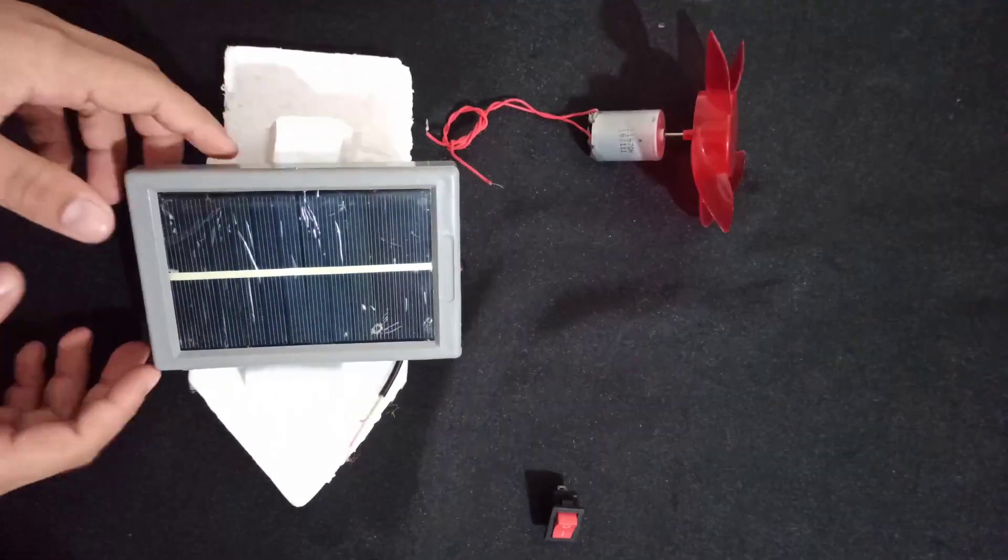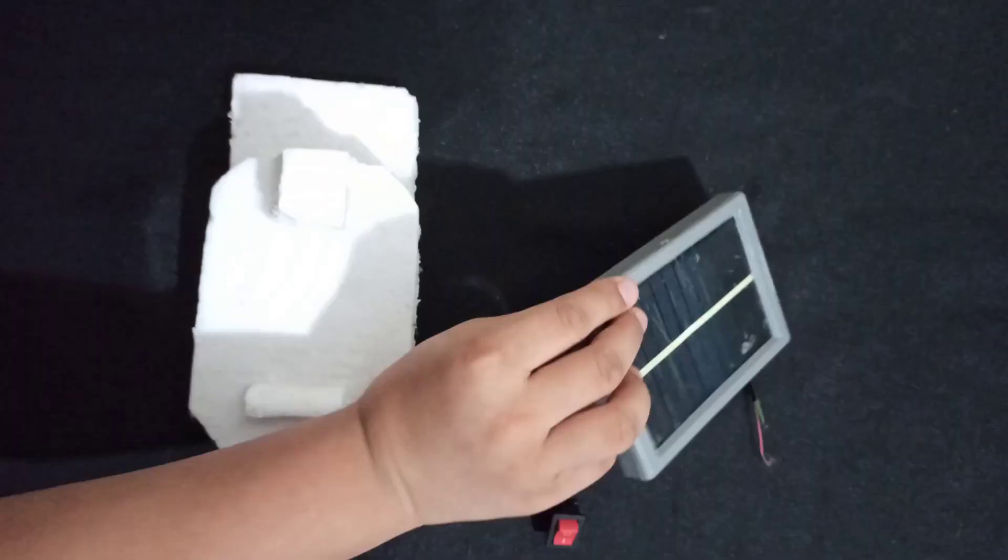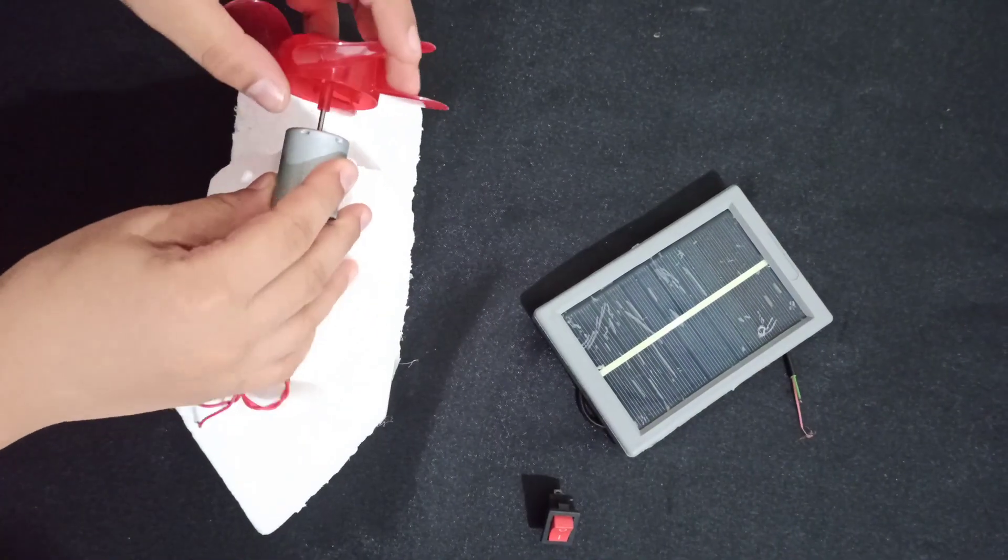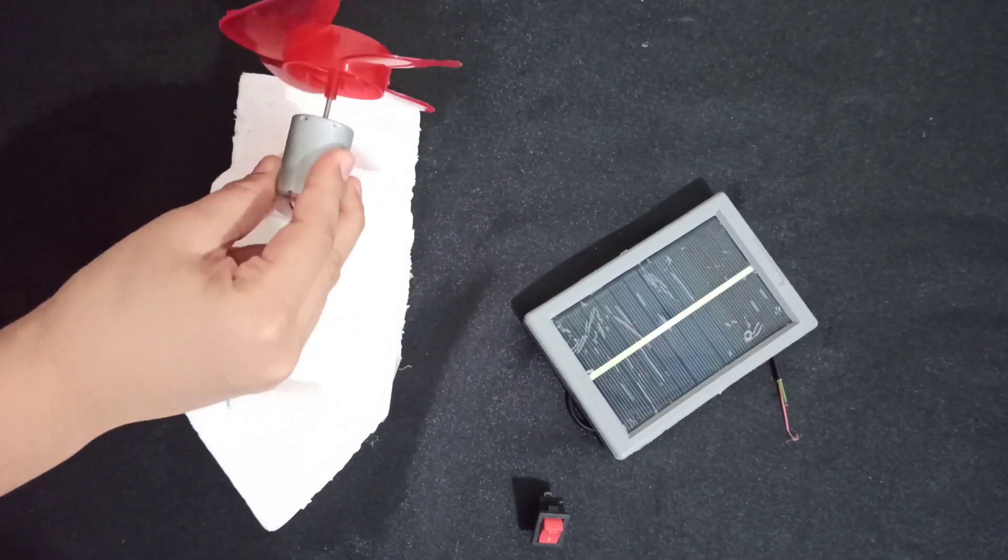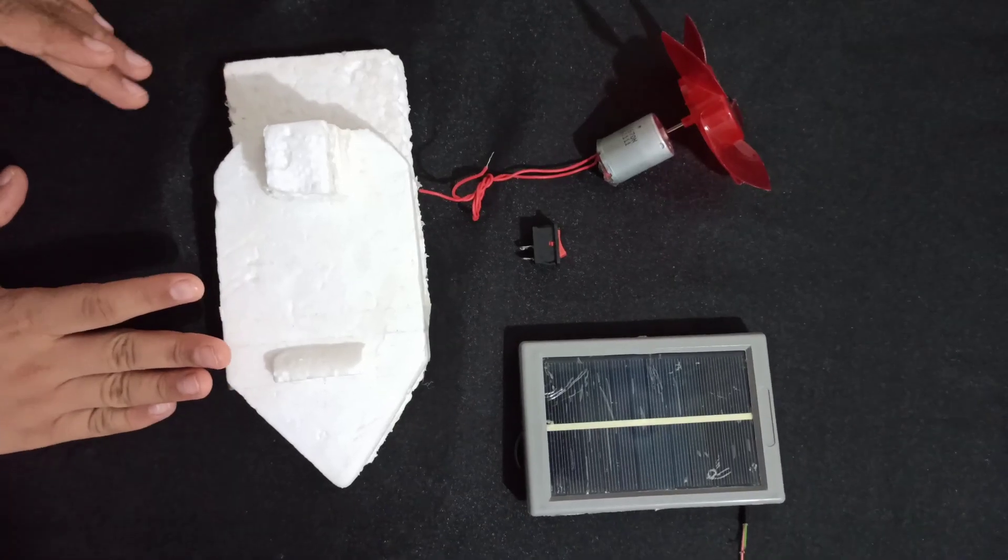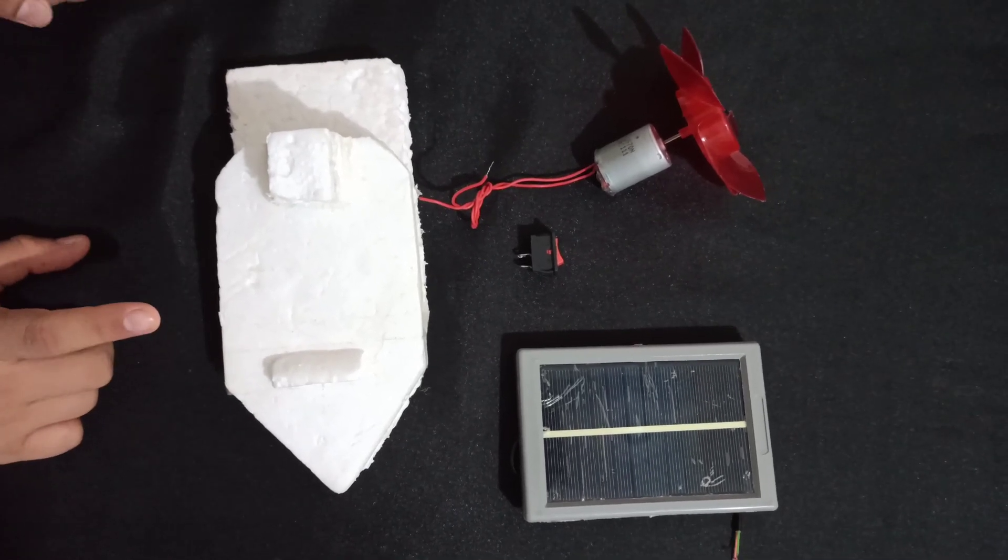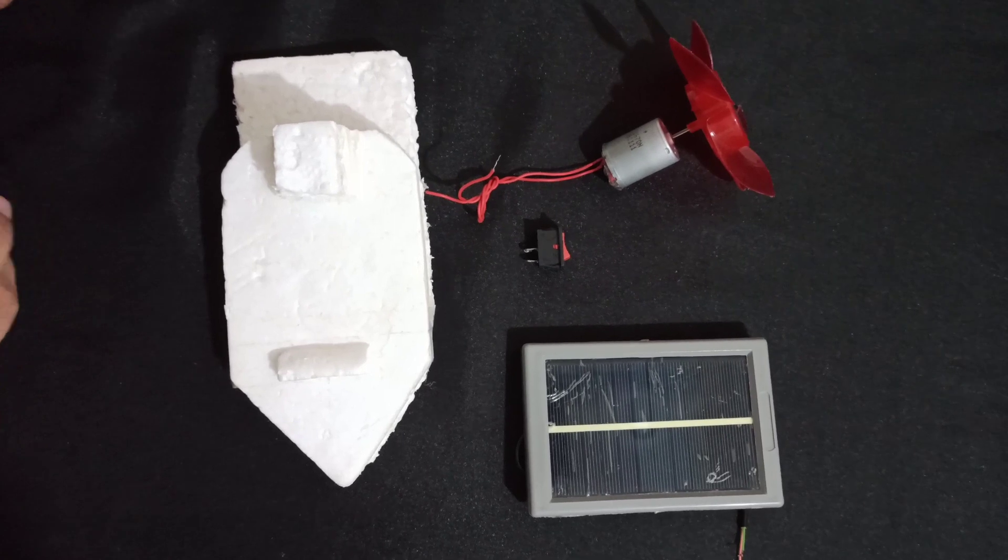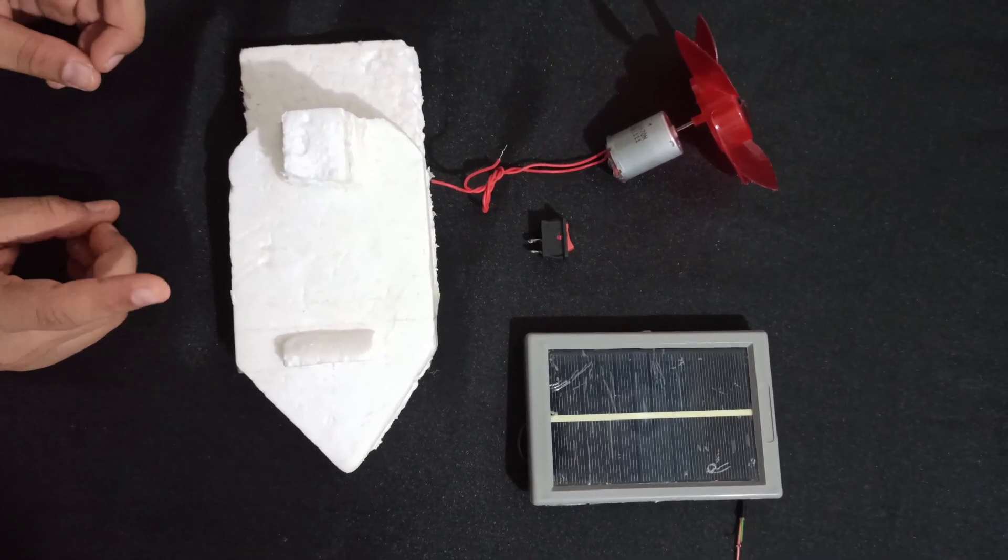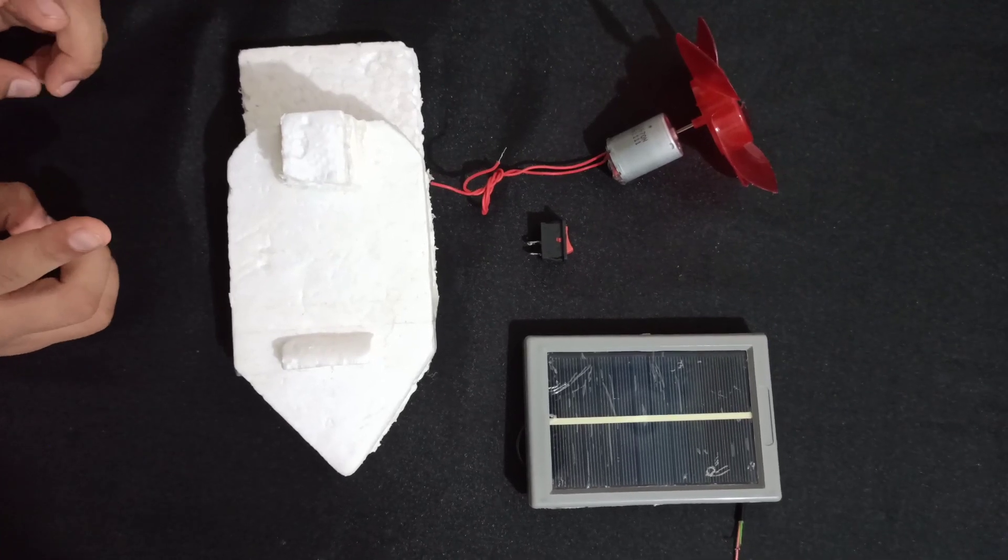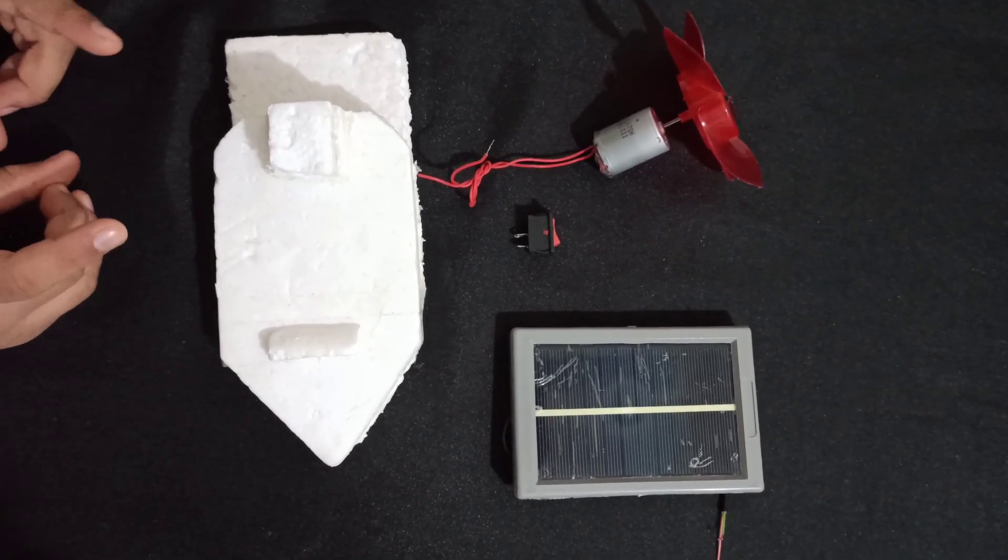Our second change is a stage so that our motor will stay in one place. The third change is the extended thermocol. It has two benefits: number one, give better stability to the boat; number two, once the propeller rotates, it should not splash water or the electronic parts may damage.